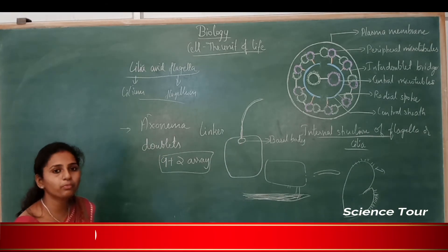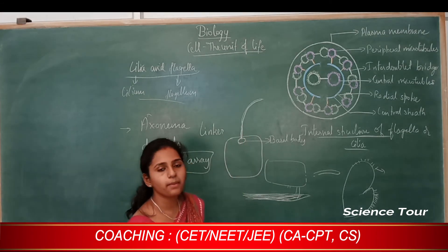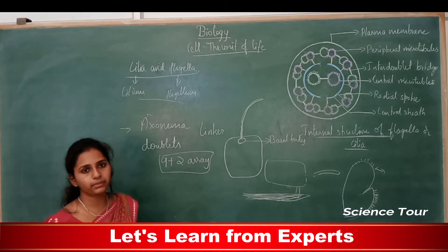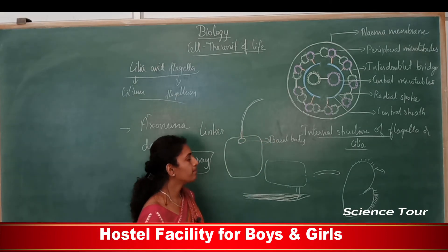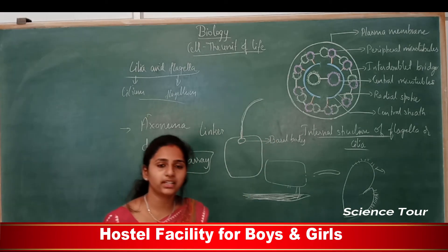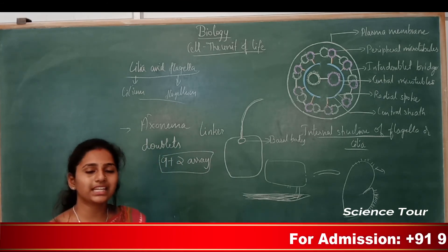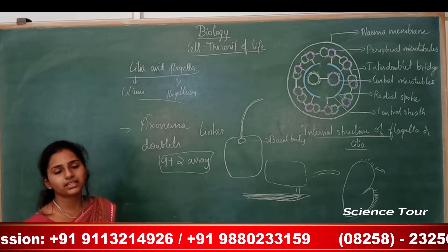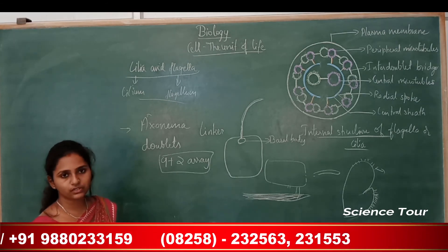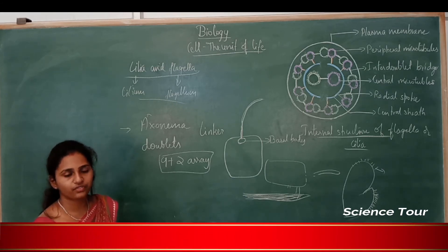The function of flagella is movement — motility of the eukaryotic cell. In eukaryotic cells, the microtubules are well-defined and complex compared to prokaryotic cells. Cilia and flagella are especially seen in protists like Euglena and Paramecium. Even in animals, sperm cells contain flagella for motility.